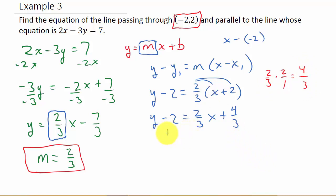And then I'm going to add 2 to both sides. And so that's going to give me y = 2/3x + 10/3. So remember how to add fractions. I've got 4/3 + 2. That's 2/1.